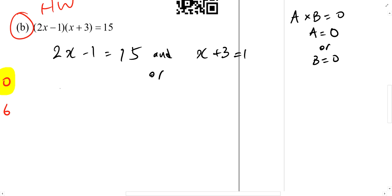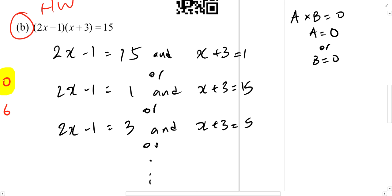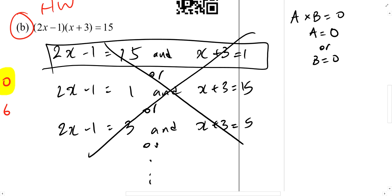And then we have other options, or 2x minus 1 equals to 1, and x plus 3 equals to 15, or 2x minus 1 equals to 3, and x plus 3 equals to 5, or so on and so forth. Does this look right? Because we have the same x over here, if you want to solve all these, your x values may not be the same.